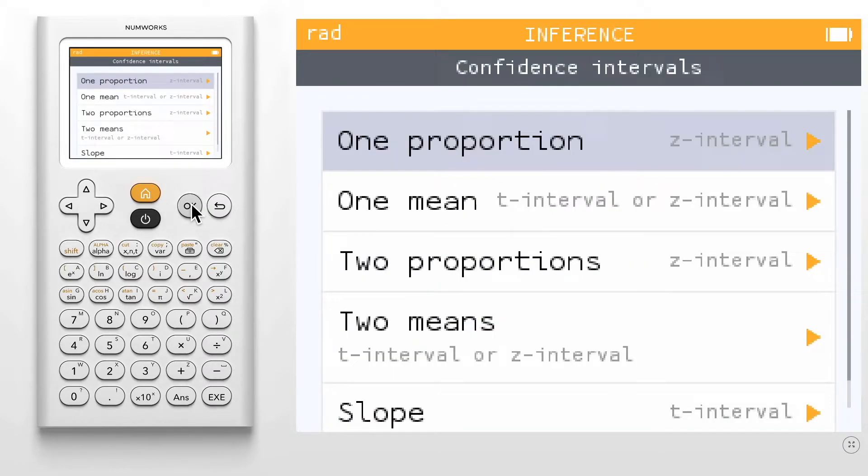For this example, we will construct a one sample z interval for a proportion. Select one proportion.